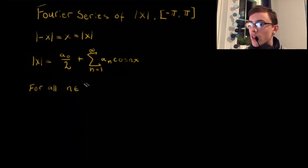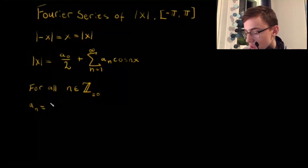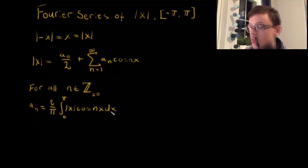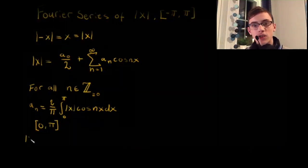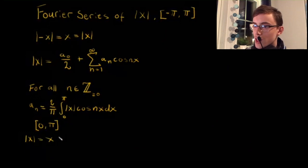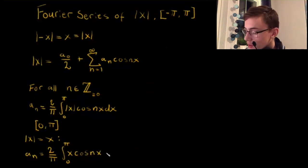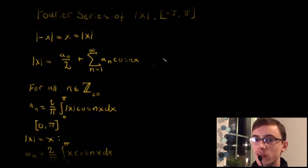For all n in the integers greater than or equal to 0, aₙ equals 2/π times the integral from 0 to π of |x| cos(nx) dx. On the real interval 0 to π, |x| is just x, so aₙ equals 2/π times the integral from 0 to π of x cos(nx) dx. Thus the Fourier cosine series for x over the interval 0 to π can be applied directly.